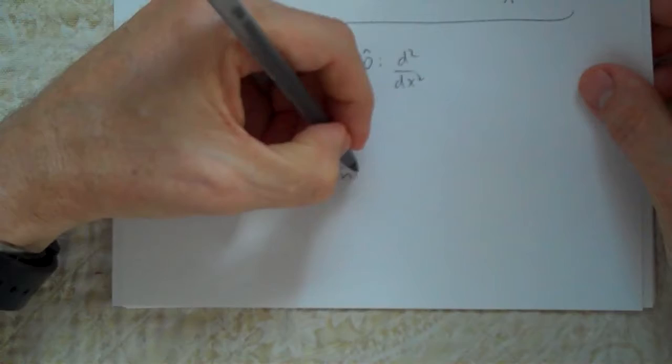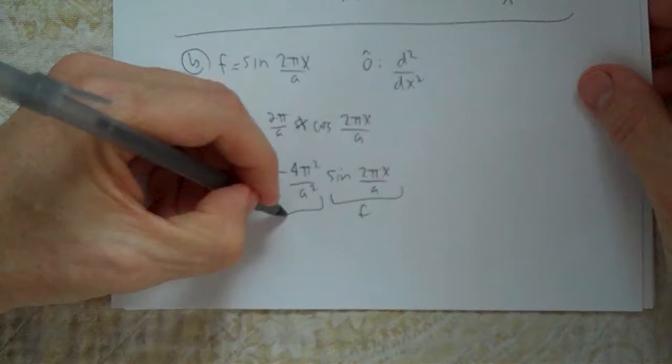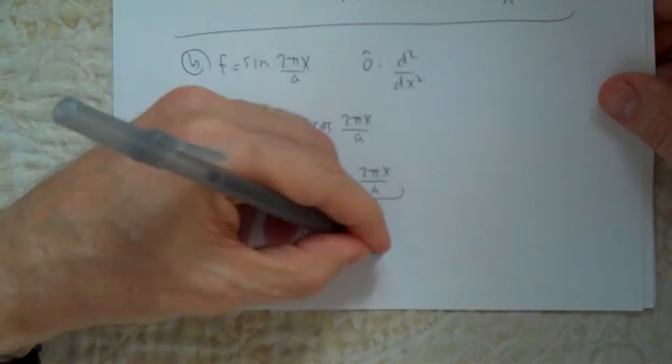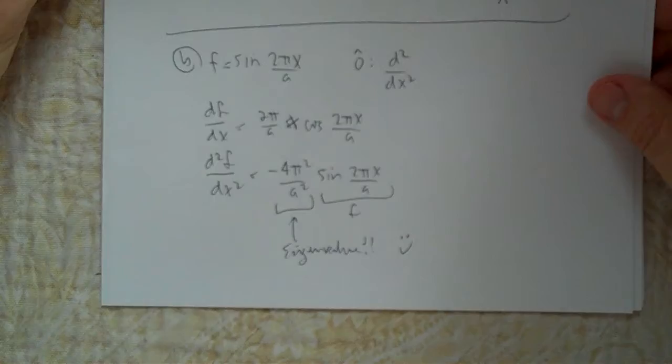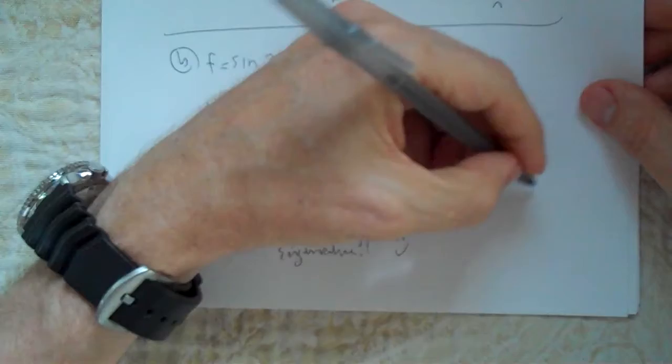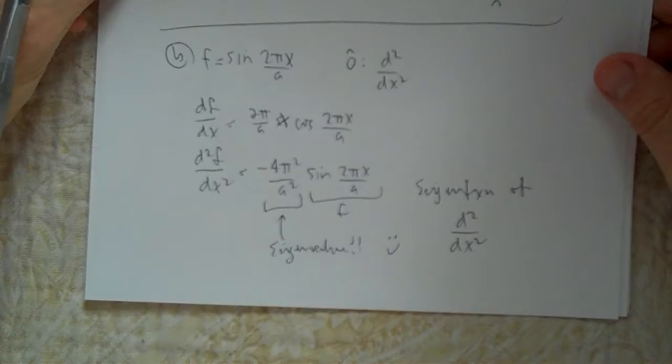Sine(2πx/a) is f back again! So the eigenvalue is minus 4π²/a². Yes, this IS an eigenfunction of the operator d²/dx².